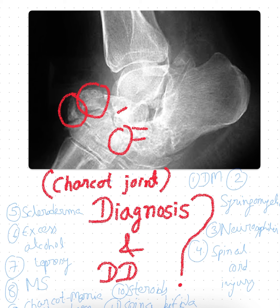On X-ray, initially there will be osteopenia. After that the joints or bones will start to be destroyed. Then large fragments begin to fuse with each other, and ultimately this joint becomes damaged — that is what is termed the Charcot joint.